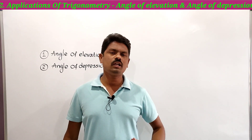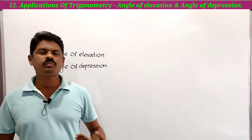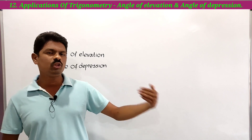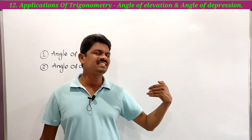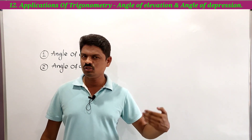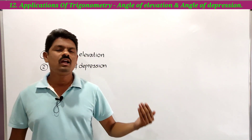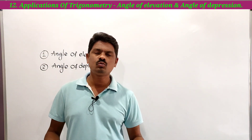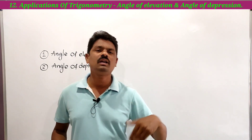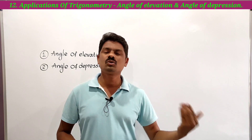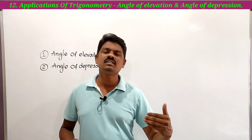Hi, hello! Welcome to our channel 'Learn More.' Today we are going to start a new chapter: Applications of Trigonometry. It is the 12th chapter in our textbook. Previously, this chapter was known as 'Heights and Distances.' It is used to find the height of a mountain, a tree, or a building, or the distance between any two mountains or between a tree and a tower.